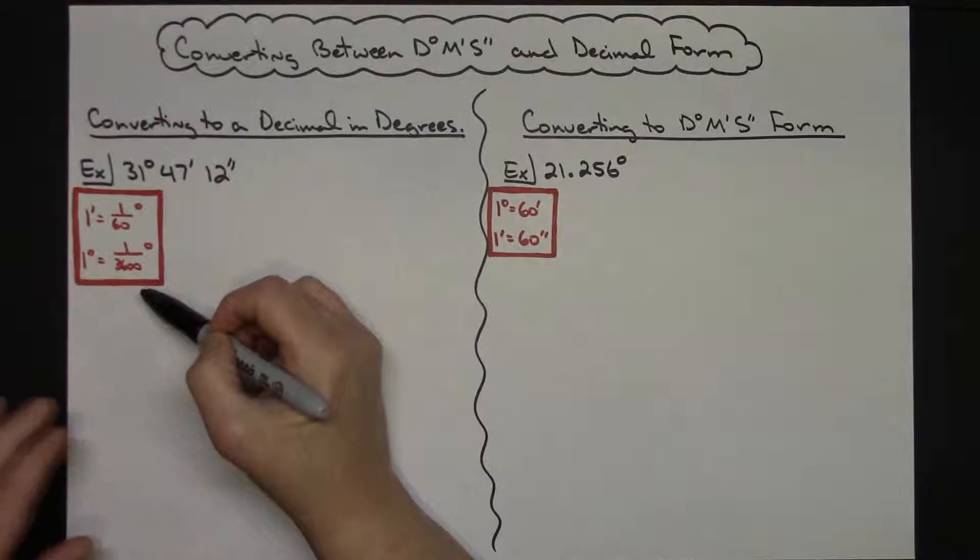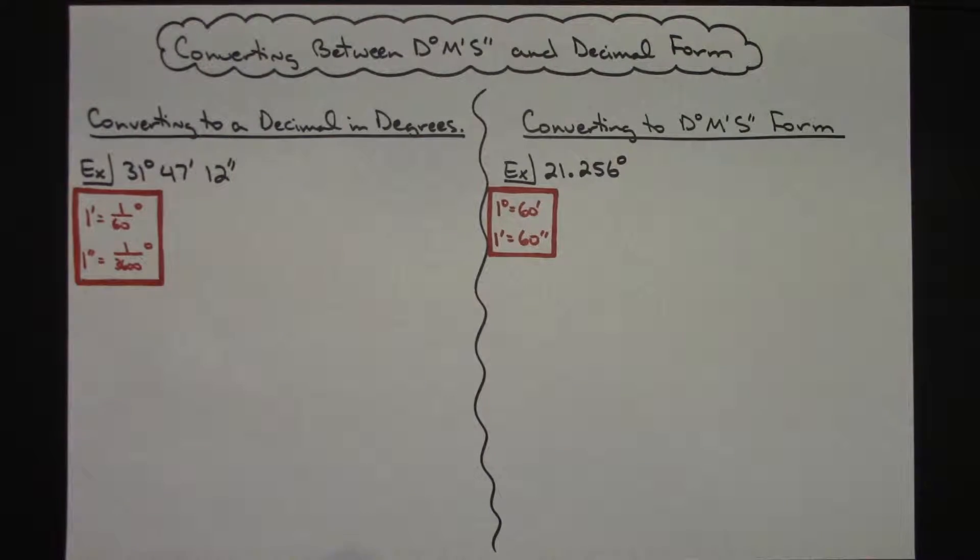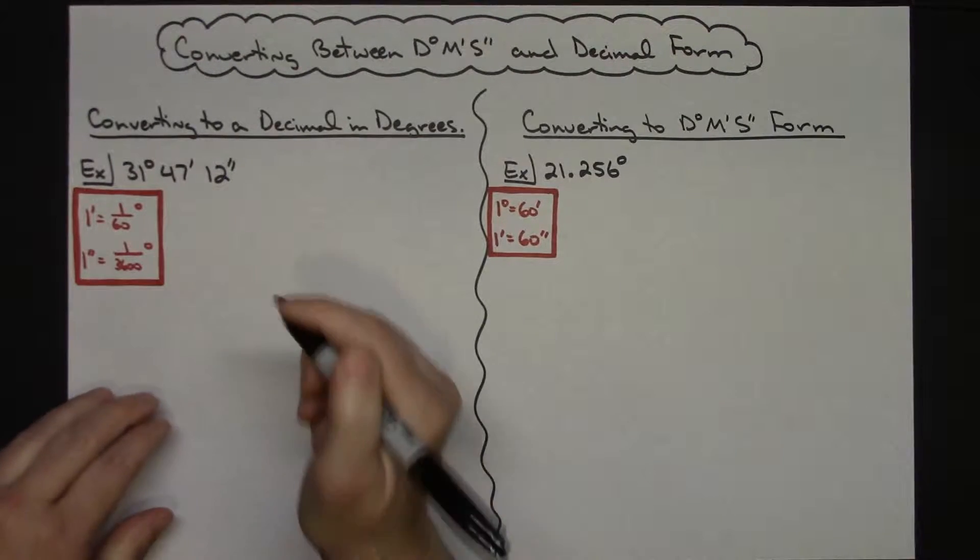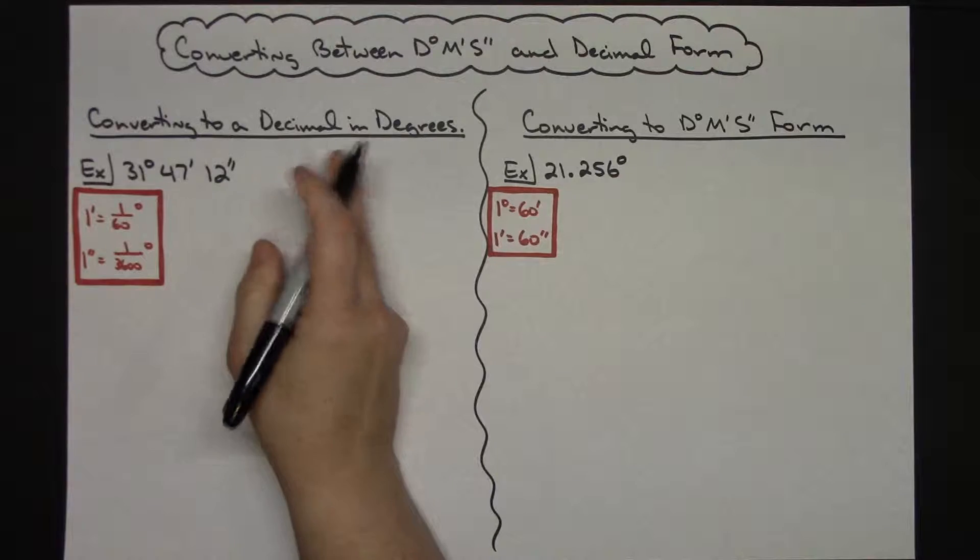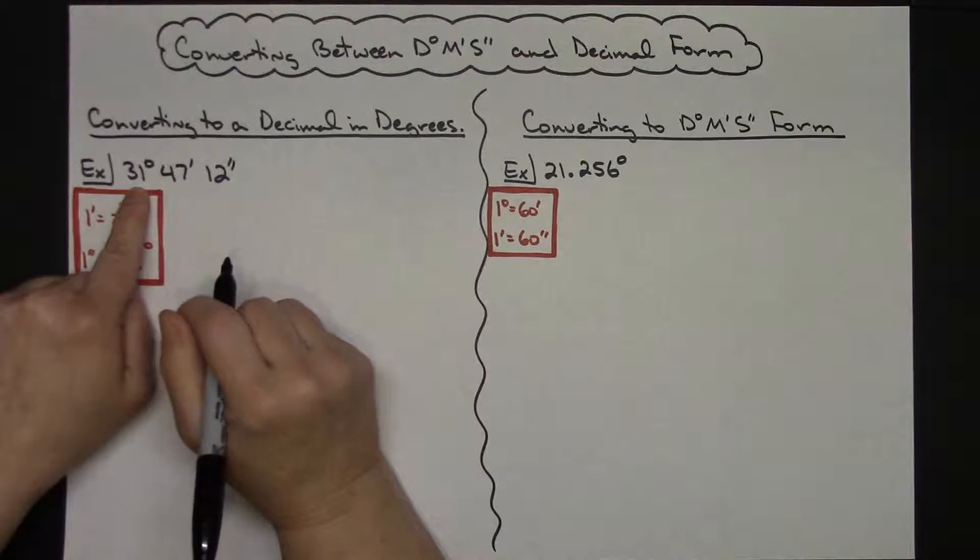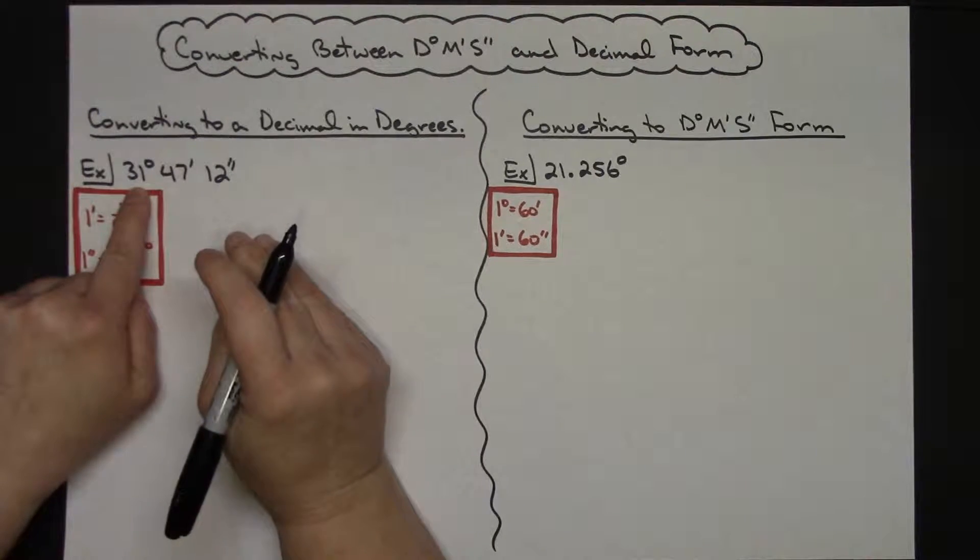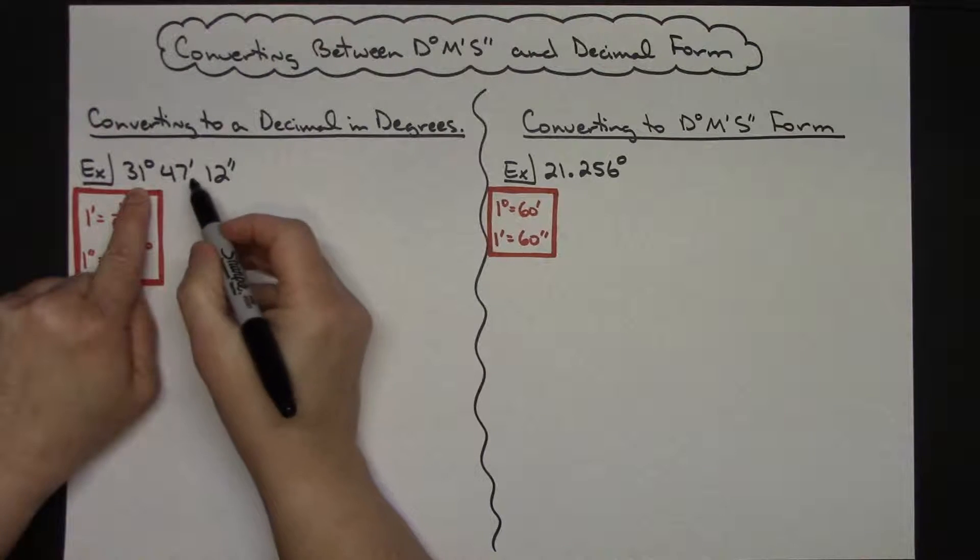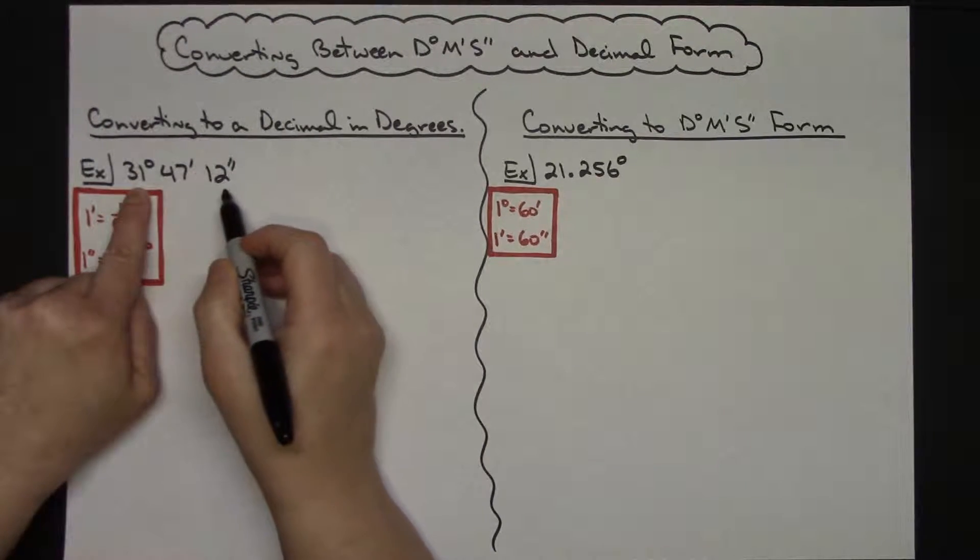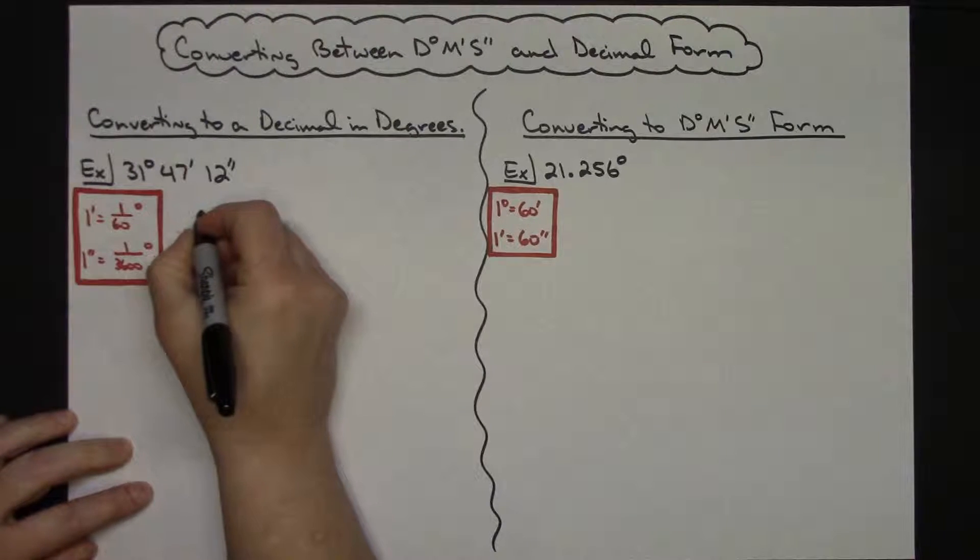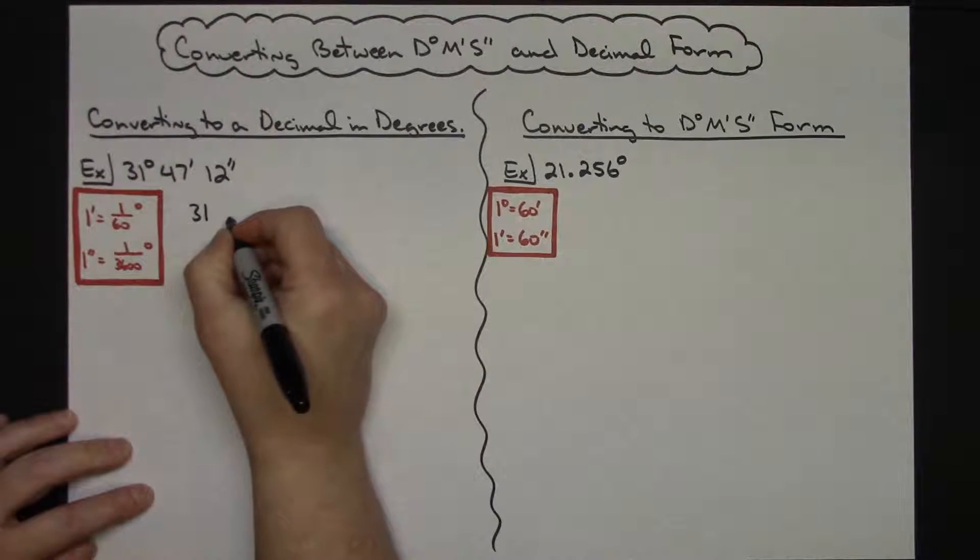Because these will be our conversion factors that we are going to be using when we do this conversion. Now if I want to convert this to a decimal in degrees, my 31 degrees I know I have a full 31 degrees. I'm really concerned about the 47 minutes 12 seconds here, so the 31 I'm not going to have to do anything with that.